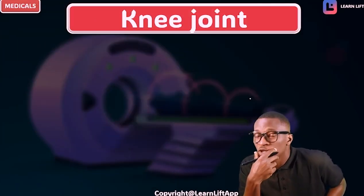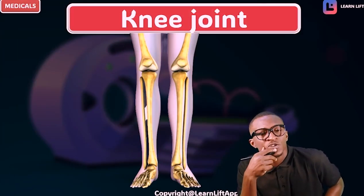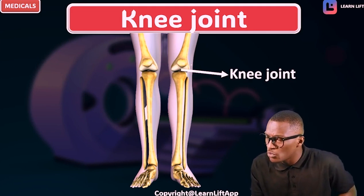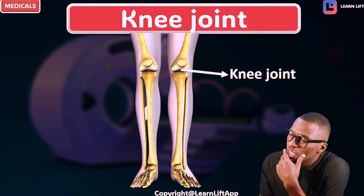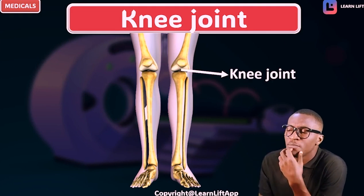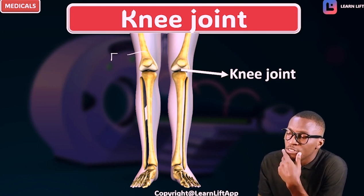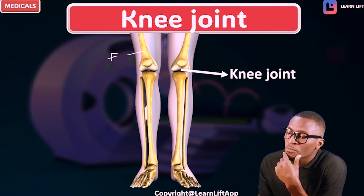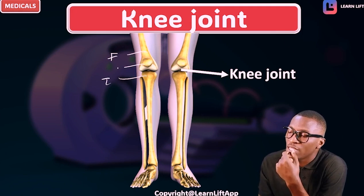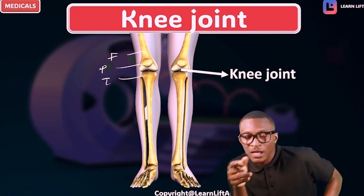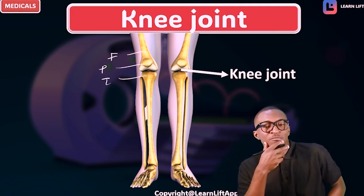We talk about the next joint, which is the knee joint. The knee joint is formed by — this is the distal part of the femur, this is the upper part of the tibia, and this is the patellar bone. Patellar is the largest sesamoid bone.